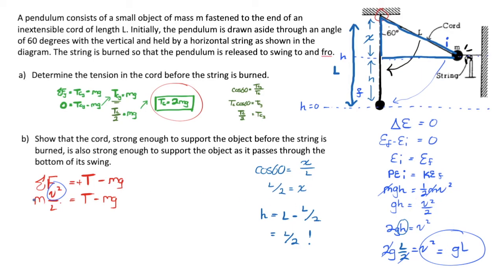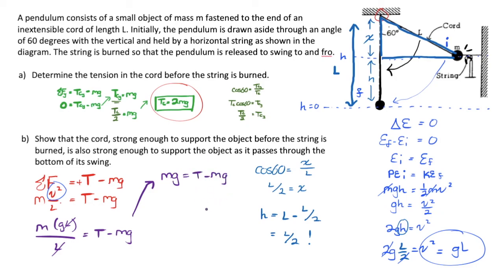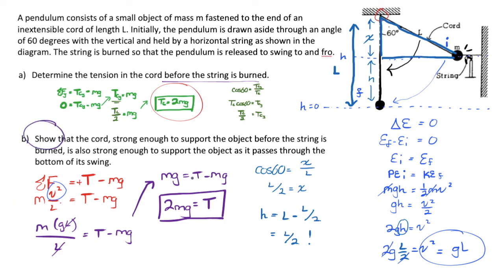We substitute V squared equals GL into our centripetal force equation: M times GL over L equals T minus MG. The Ls cancel, leaving MG equals T minus MG. Adding MG to both sides gives T equals 2MG — exactly the same as the tension originally present in the cord before the string was burned. Therefore, we have successfully shown that the cord supporting the ball before the string is burned is also strong enough to support the ball at the bottom of its swing.